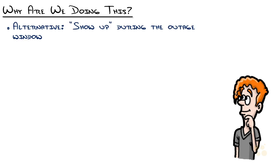First off, this is the alternative to just showing up during the outage window. This is what I've done a lot, and so have a lot of other network engineers — you prepare your steps, you go, okay, I know what I'm going to do, and you just get there and kind of figure out the configuration as you go. And the great thing and the bad thing is it works. It may not work as well as you hoped. You might be there a lot longer than you hoped, but at the same time it works.